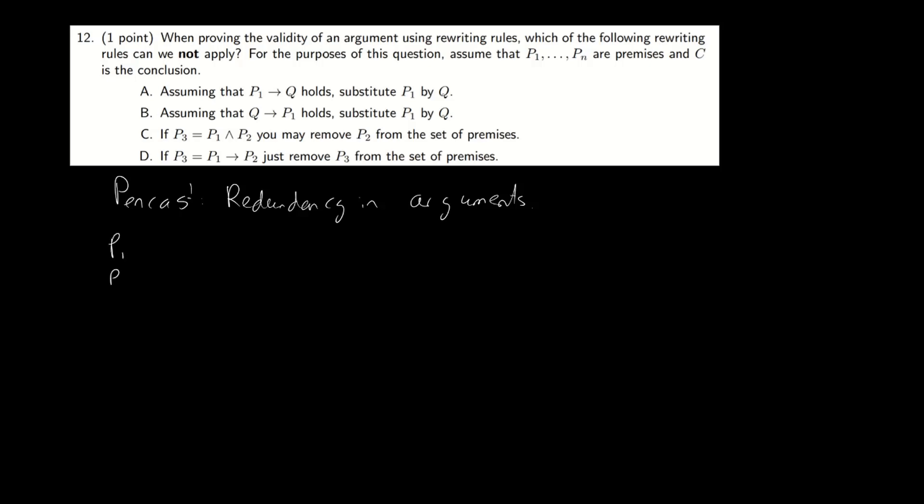So the question says that we have some argument that has premises P1 all the way up to Pn and some conclusion C.